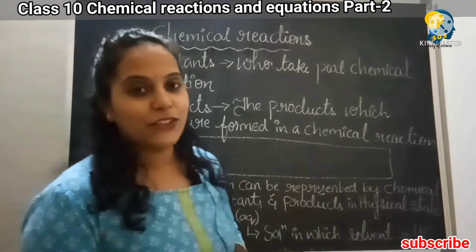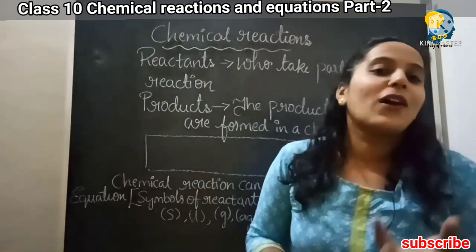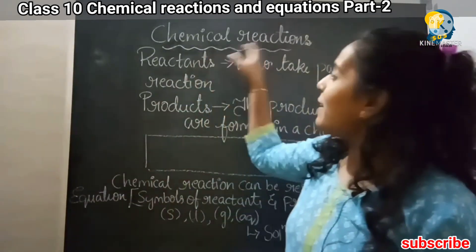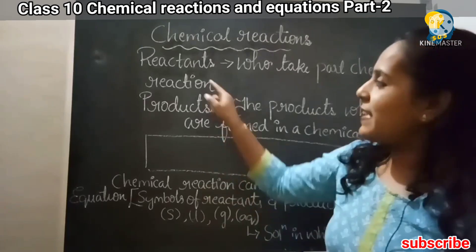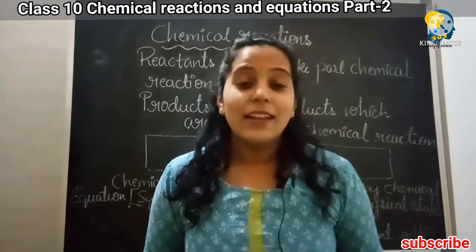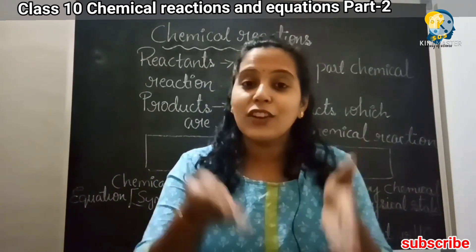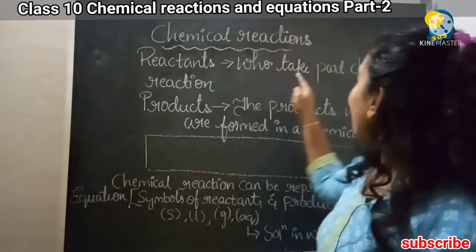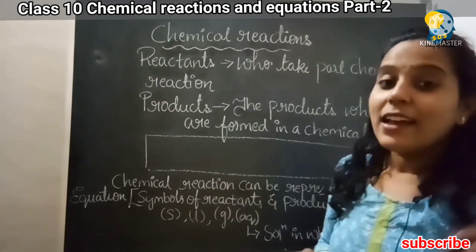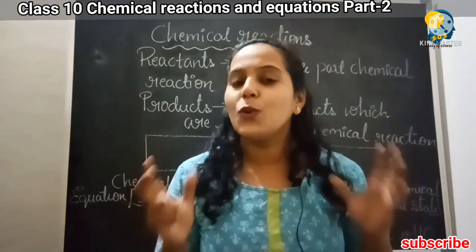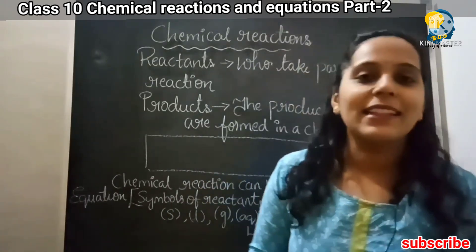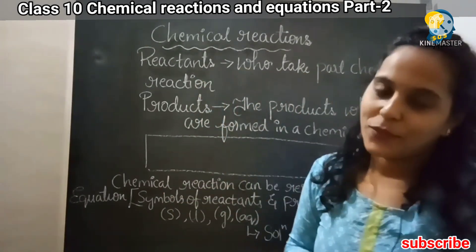What does it mean by Chemical Reactions? It is a symbolic representation. A chemical reaction includes reactants and products. The substance which takes part in the chemical reaction is called a reactant.